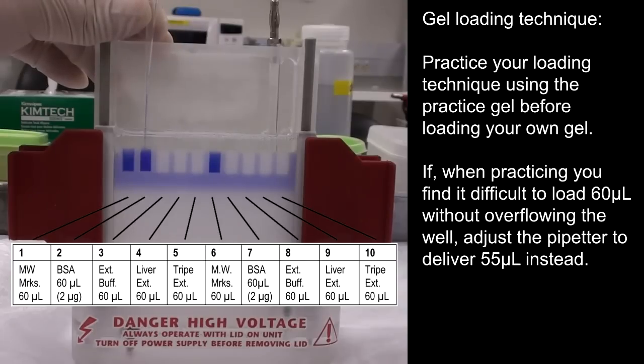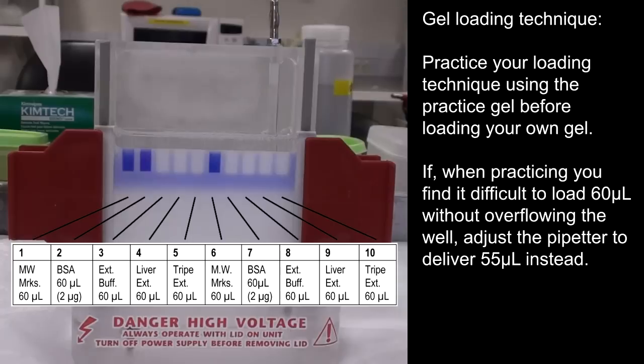If, when practicing, you find it difficult to load 60 µL without overflowing the well, adjust the pipetter to deliver 55 µL instead.